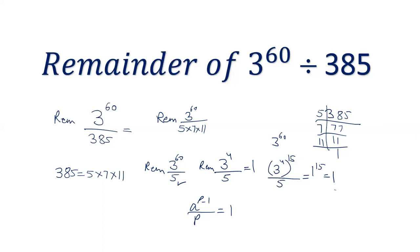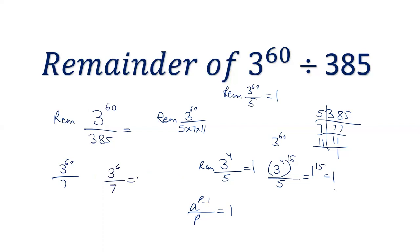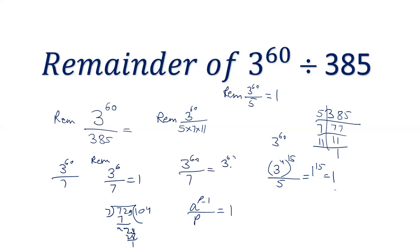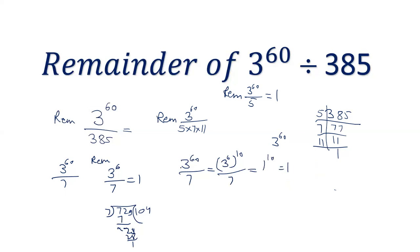Now let's check 3 power 60 divided by 7. Since 7 is a prime number, by Fermat's Little Theorem, 3 power 6 divided by 7 will give the remainder as 1. You can check that 3 power 6 is 729, and 729 divided by 7 gives remainder 1. So 3 power 60 can be written as 3 power 6 raised to the power 10, and since 3 power 6 divided by 7 gives 1, the final answer is 1 power 10, which is 1. The remainder of 3 power 60 divided by 7 is also 1.